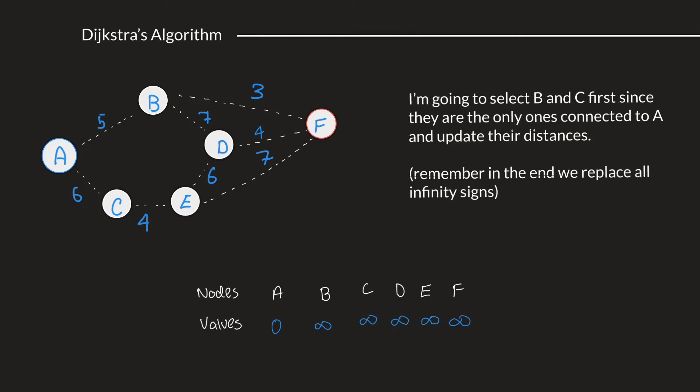First, I'm going to select B and C, because they are directly connected to A. And we can pretty much, by looking at them, say that the shortest distance from A to B would be 5, and the shortest distance from A to C would be 6. So, we remove the value of infinity from B, and we're going to update that value to 5. And we do the same for C, and put it down as 6.